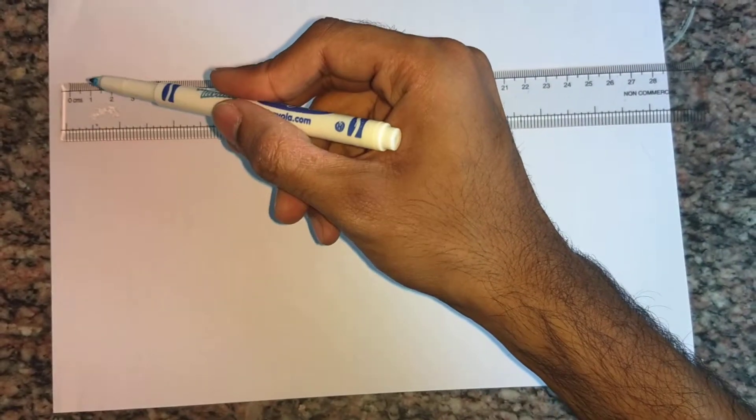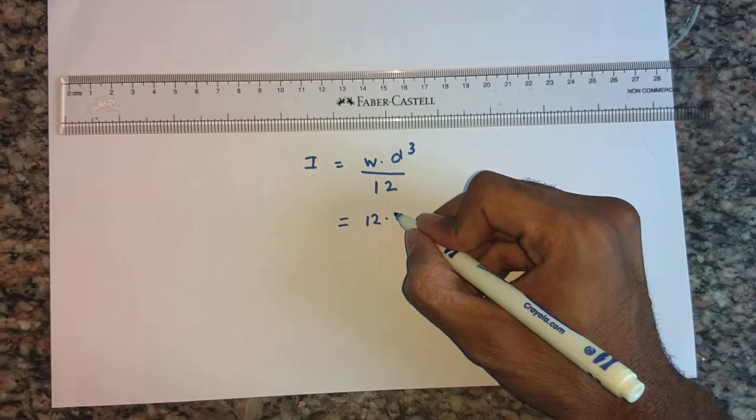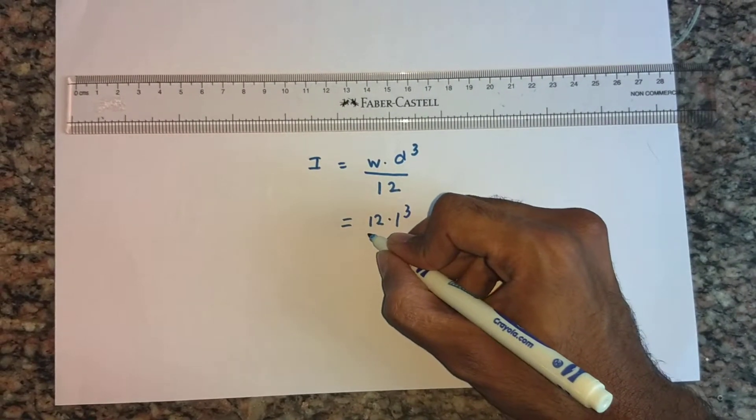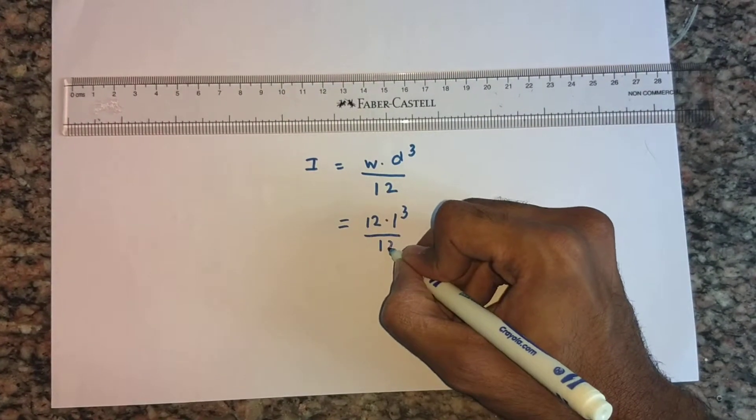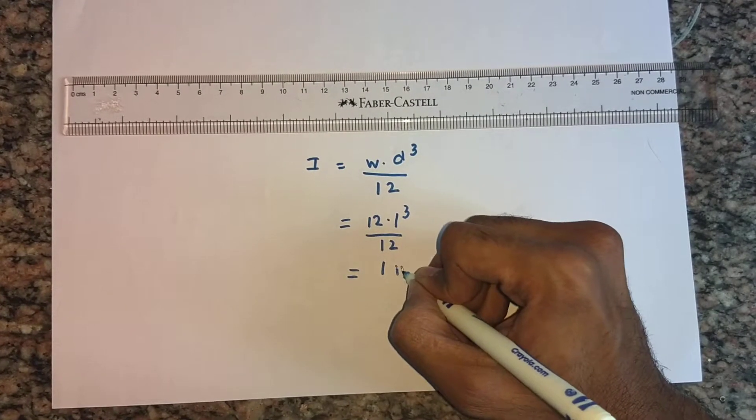Well, this is the D in this first orientation. So that is approximately 1 inch. So 1 cubed over 12. So that approximately just gives 1 inch power 4.